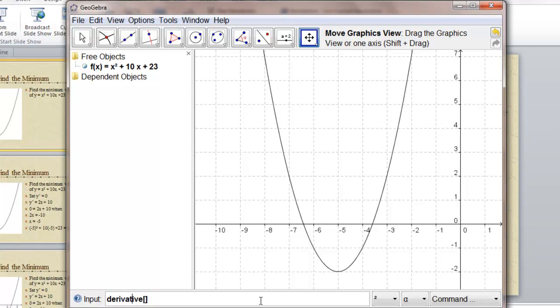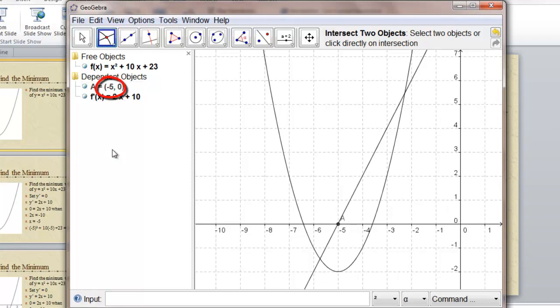I want the derivative of f. And I want to know where that is equal to zero. So where does the slope function, the derivative, intersect the x-axis? It's at negative 5.